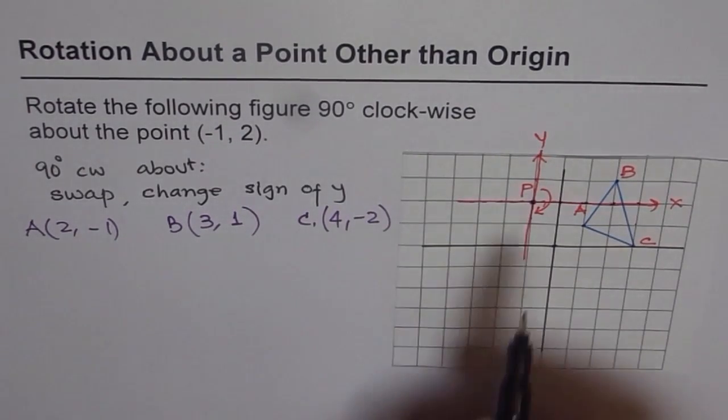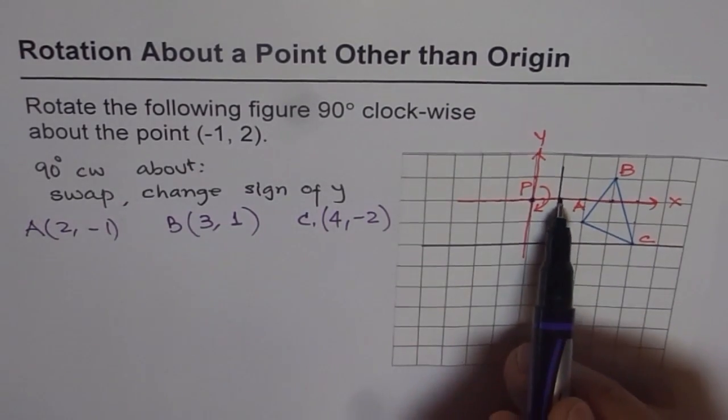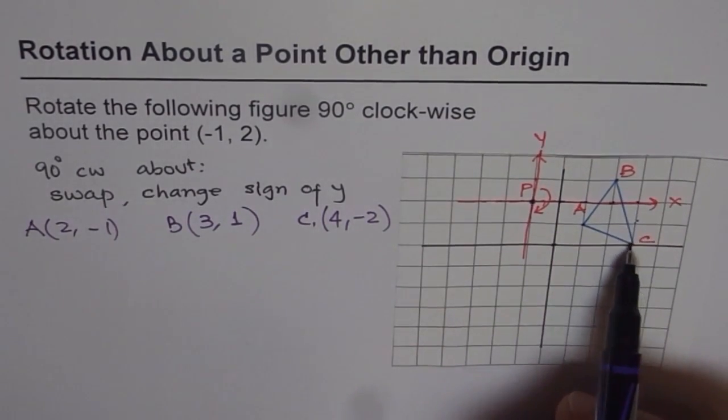Well, you can check. If from P, we go 4 right, 2 down, 1, 2, 3, 4, 1, 2, we reach C.